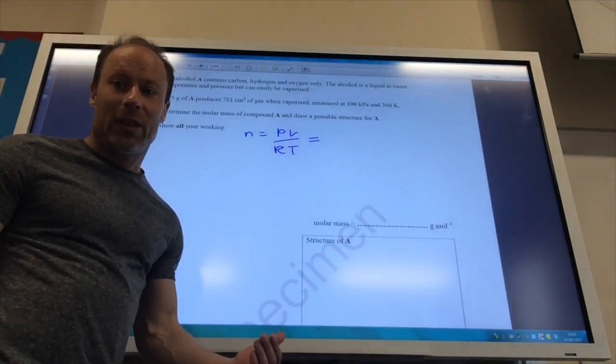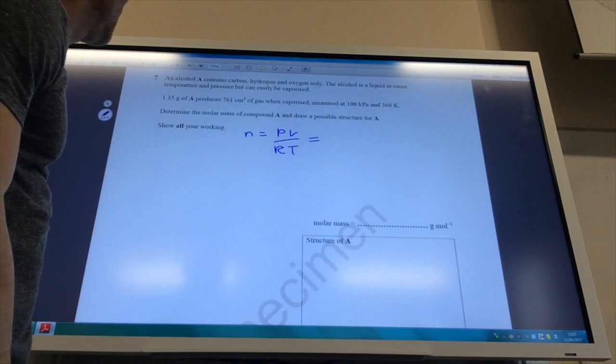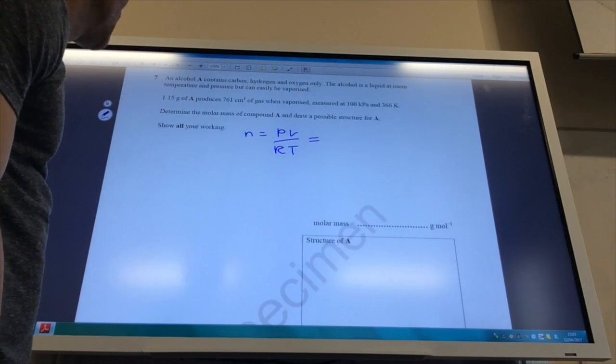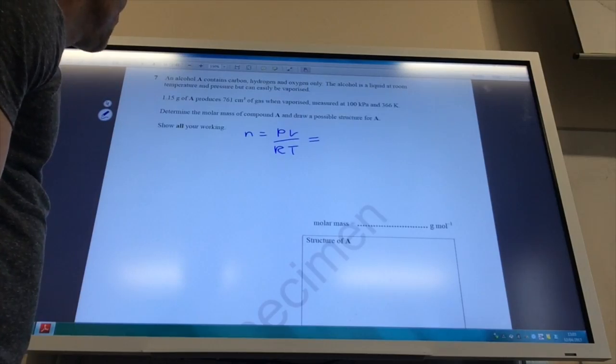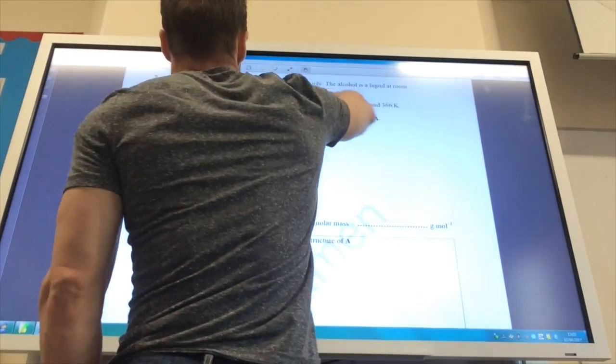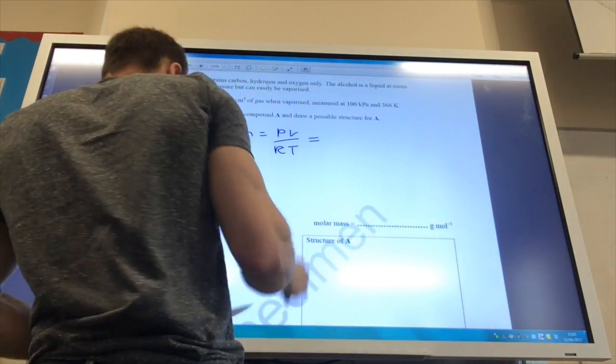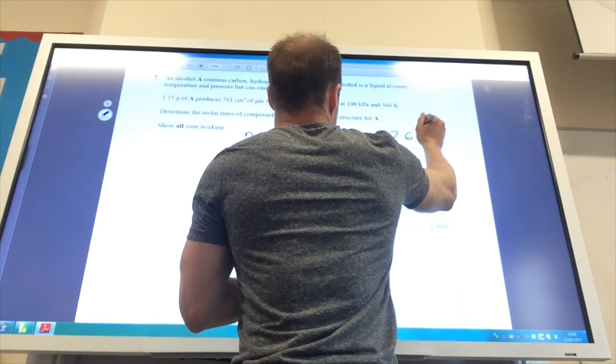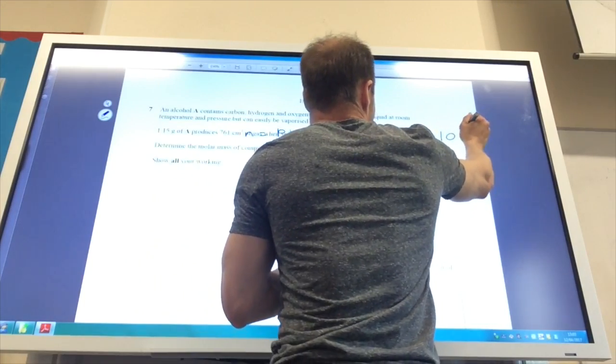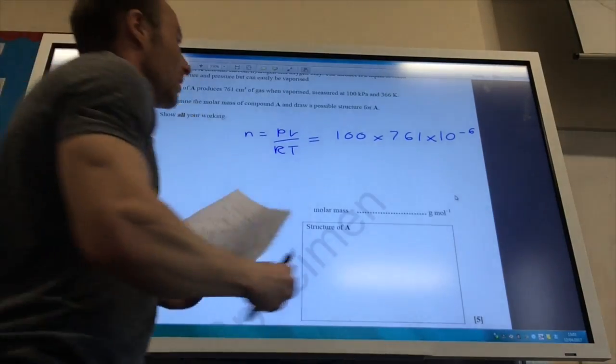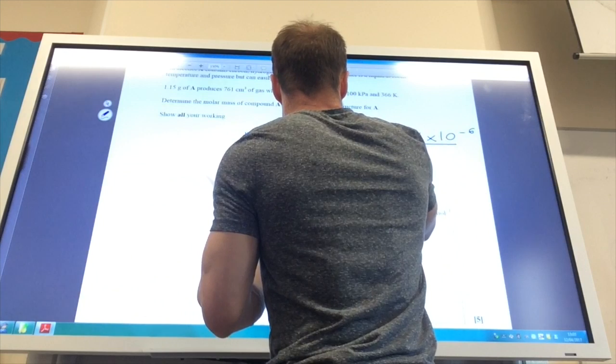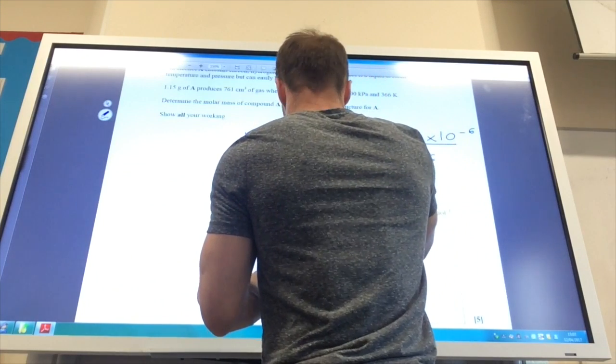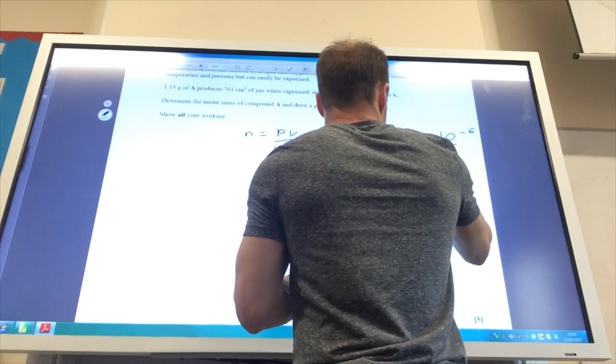And then we finally get to use the ideal gas equation. Wahey! Exciting times. I've got an alcohol containing carbon, hydrogen, oxygen, liquid at room temperature but easily vaporized. Determine the molar mass and draw a possible structure. I need to find the number, well, what have they given me? They give me a pressure, a temperature, a volume, and I've got R from my data sheet so I can find n. So the pressure is going to be 100 times the volume, which is 761 times 10 to the minus 6. Because remember, I have to convert it into metres cubed. Divide it by R, which is 8.314 times by 366 for your temperature. And that gives me 0.0250 moles.